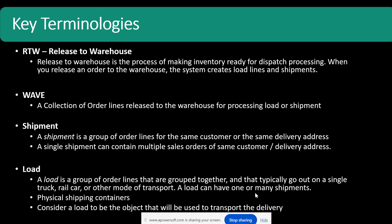A load is a group of order lines grouped together that typically go out on a single truck, container, or load-carrying vehicle — essentially the mode of transport used to deliver your finished goods to the end customer. A load can have one or many shipments. So to summarize the hierarchy: release to warehouse handles one order line; a wave handles multiple order lines and sales orders; a shipment groups orders going to a single customer or delivery address; and a load contains one or many shipments. D365 will plan your load and route based on the capacity defined in the load template.